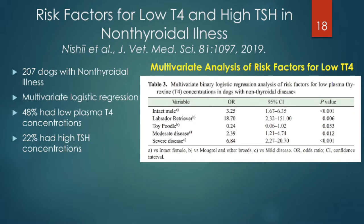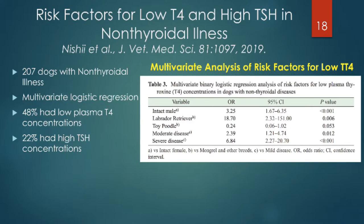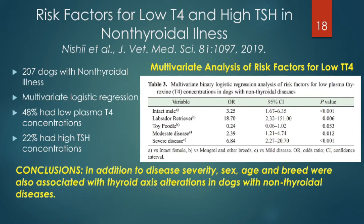Either of these findings — especially an elevated TSH — would be expected only with hypothyroidism, but multivariate analyses found that the intact male, the Labrador Retriever, and the Toy Poodle were more likely to have a low T4. Any degree of illness from moderate to severe led to lower total T4. In the ICU setting, many total T4 values are simply undetectable. The conclusion is that in addition to disease severity, male sex, high age, and certain breeds are associated with thyroid hormone axis alterations leading to low T4 in non-thyroidal illness.